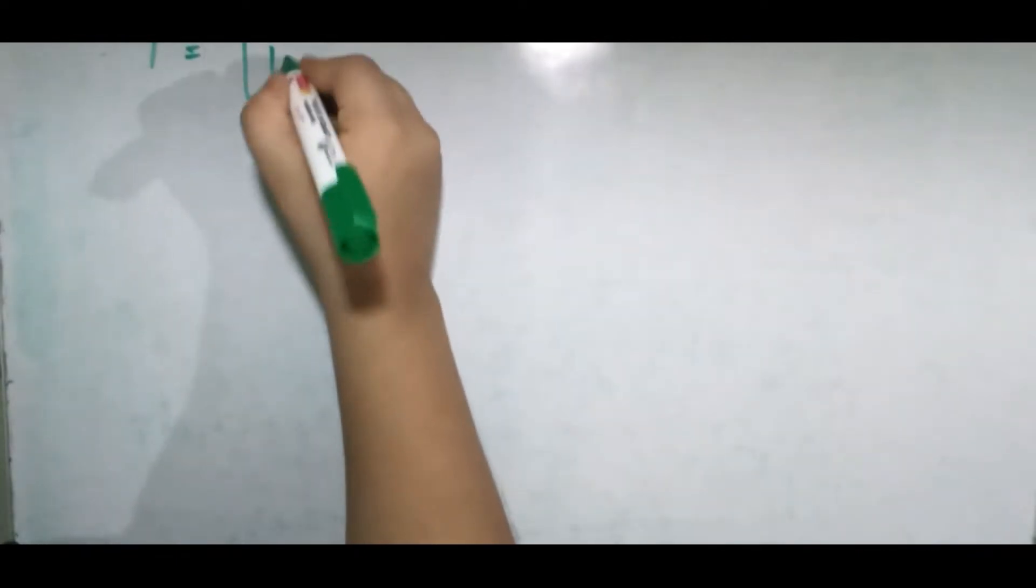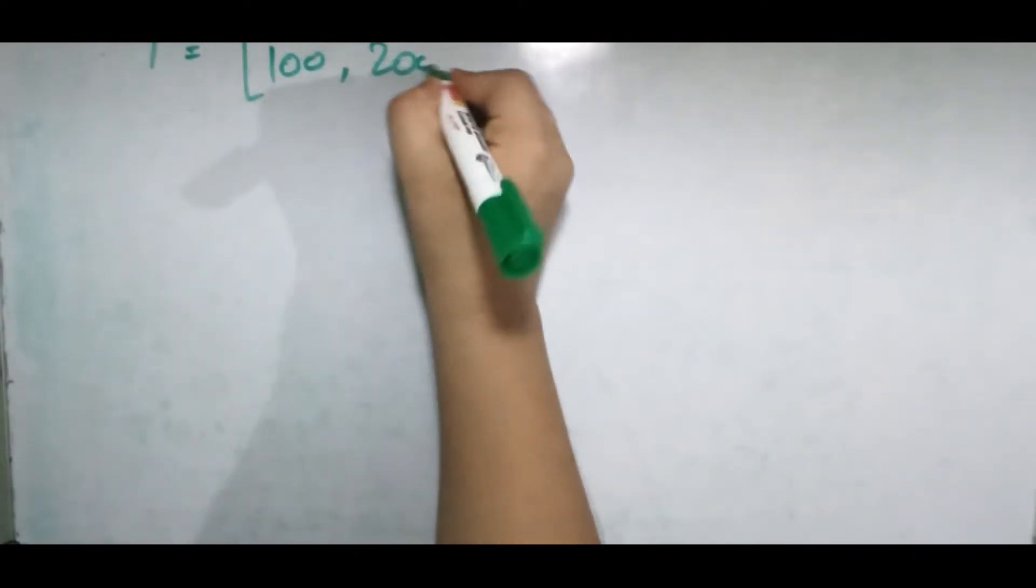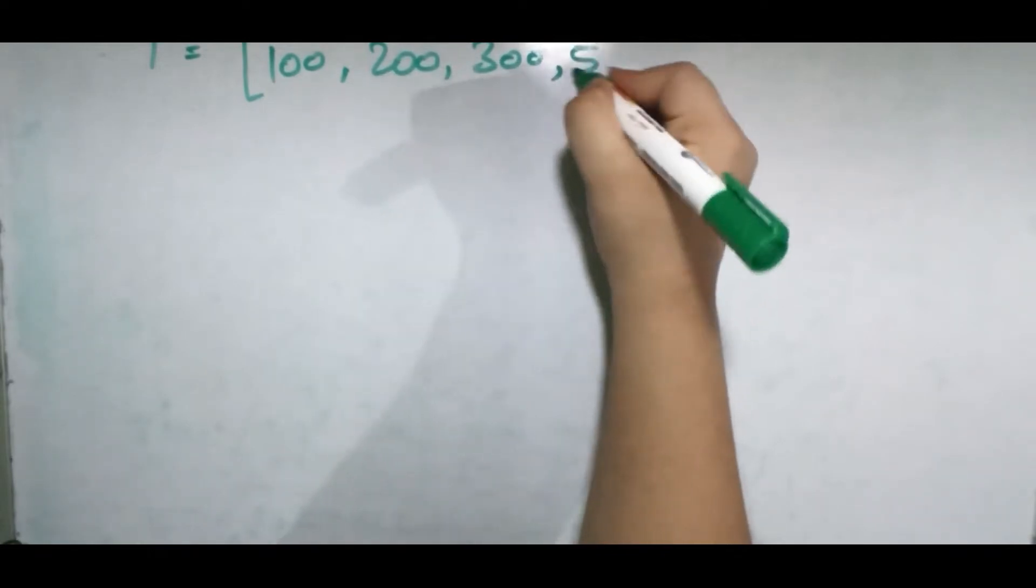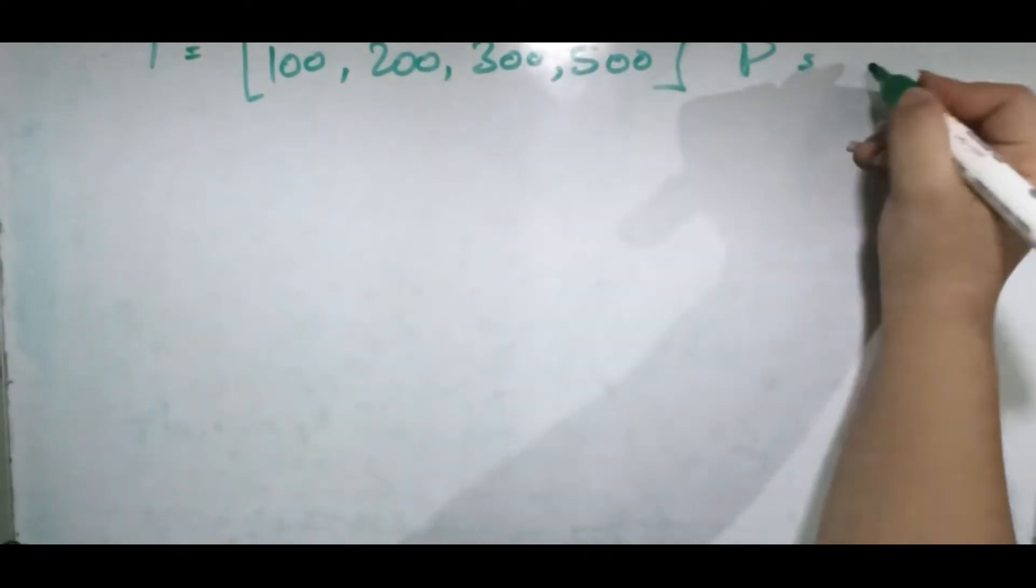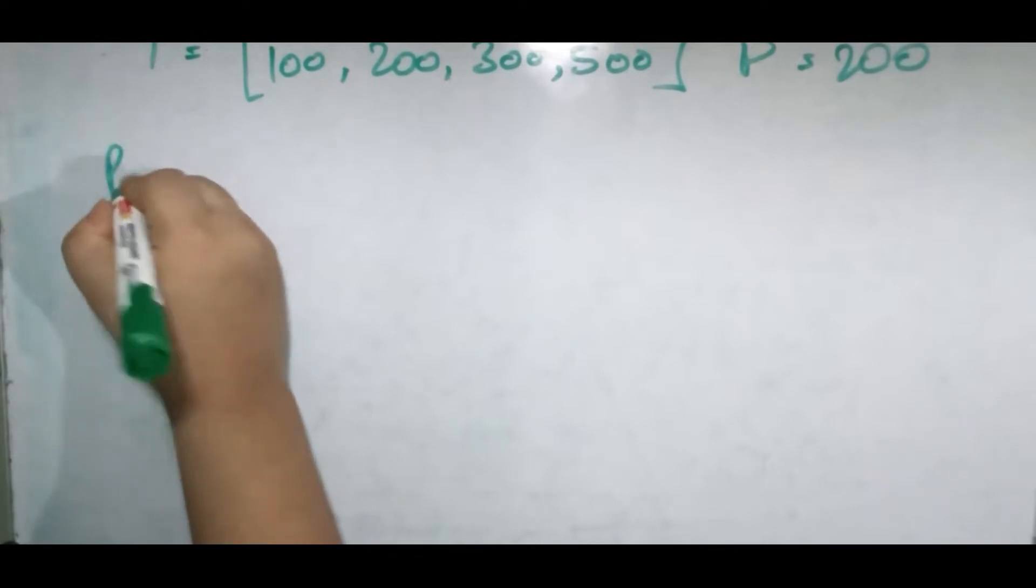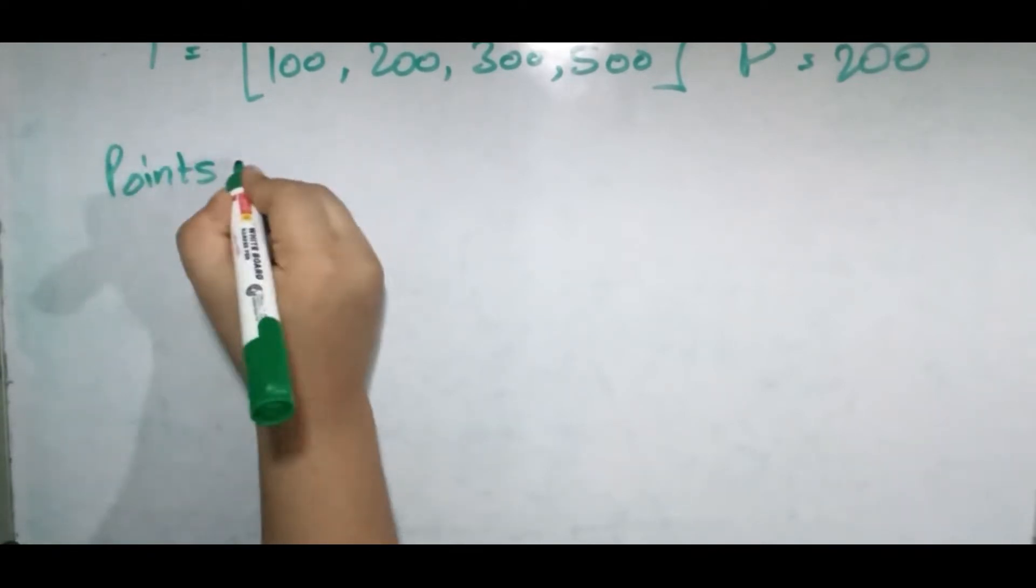example, our array is [100, 200, 300, 500] and we're given some power, maybe 200, and we have to tell what is the maximum number of points we can get.